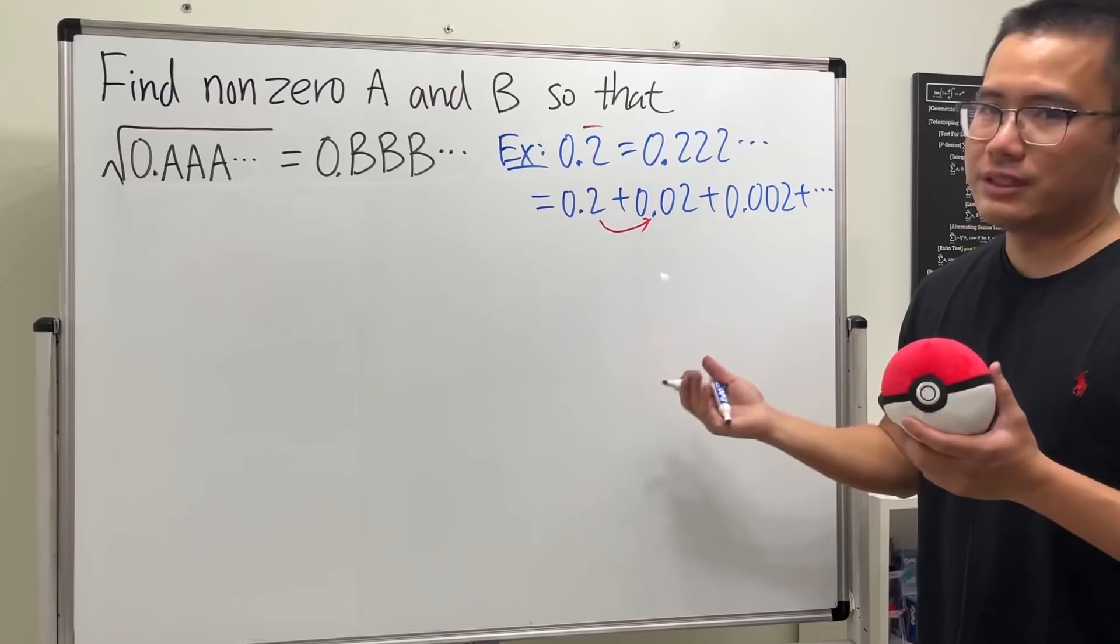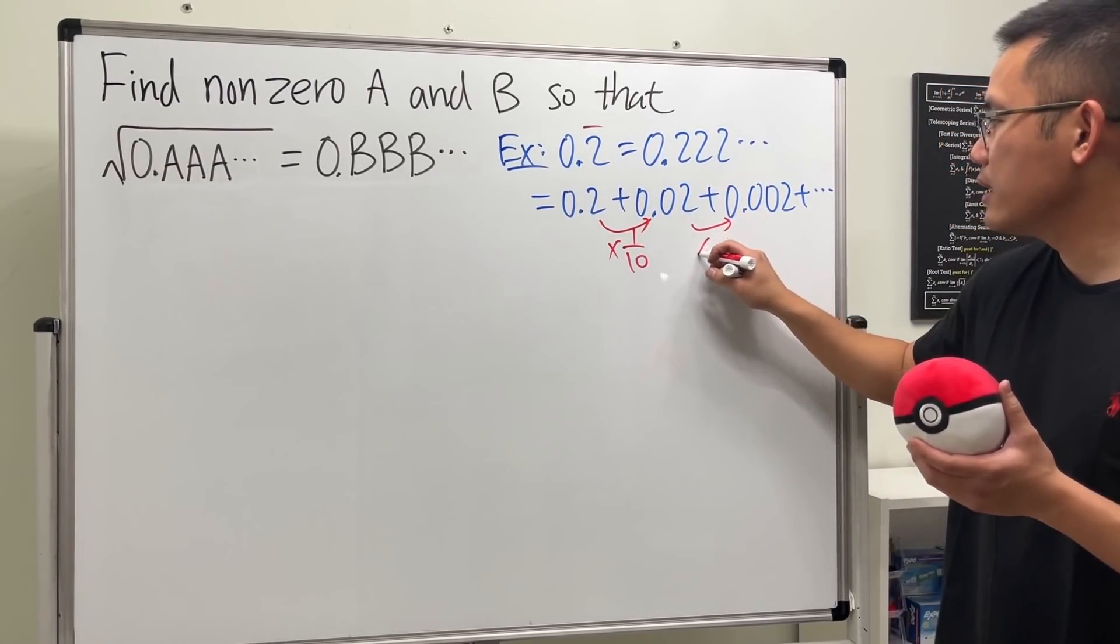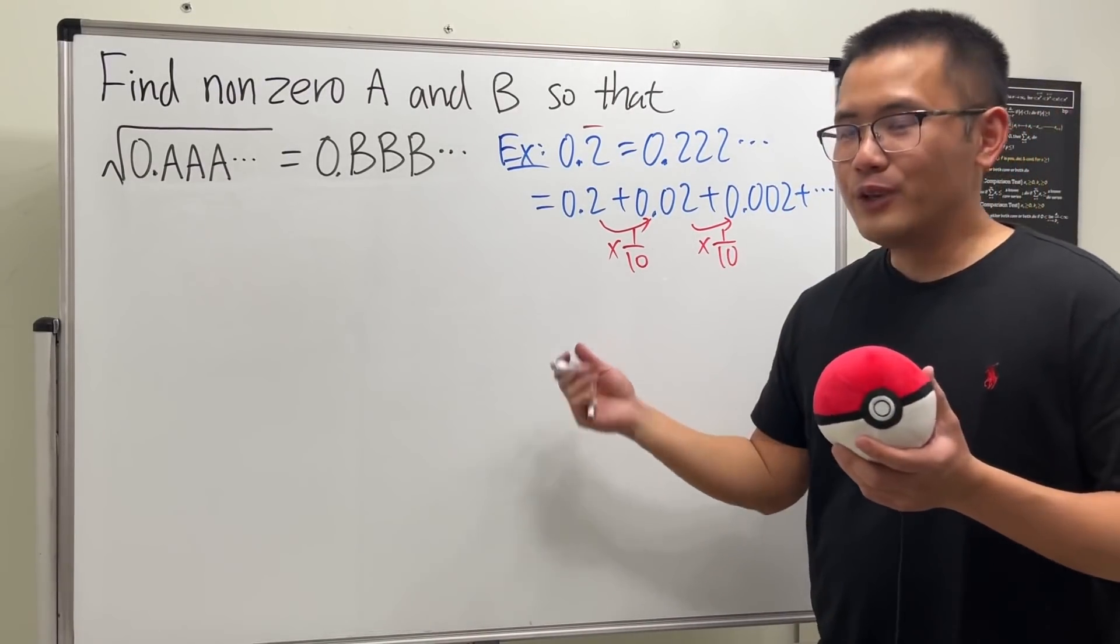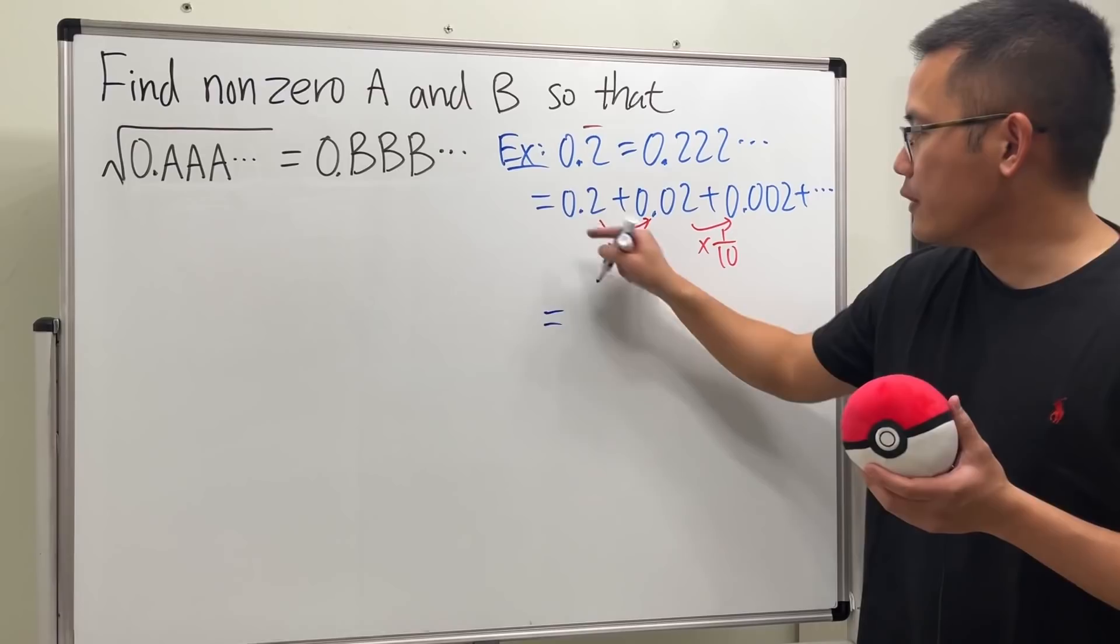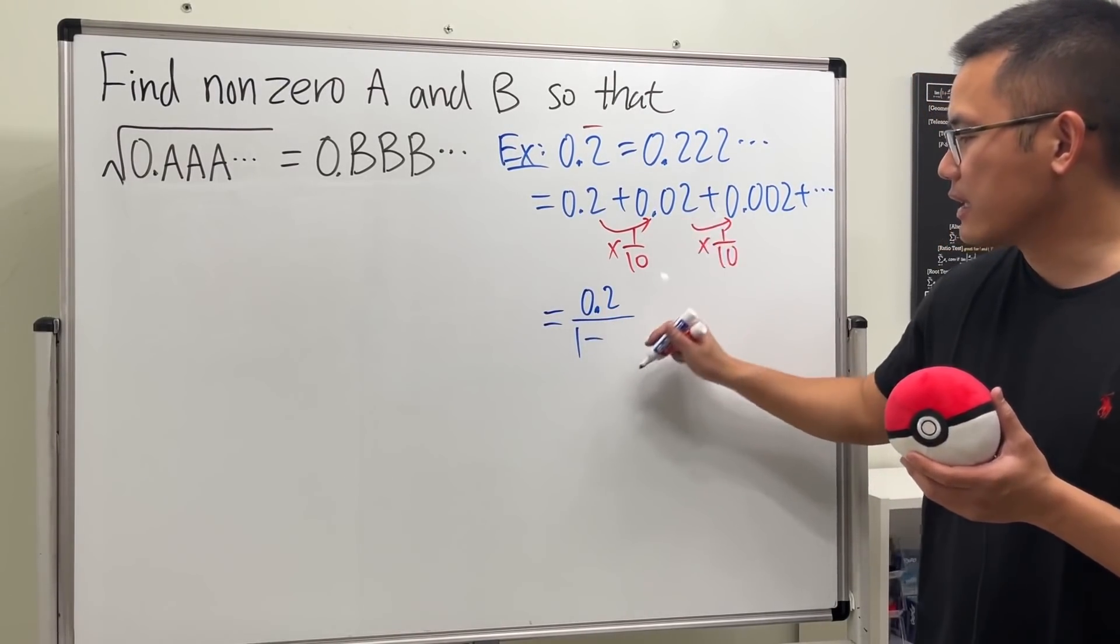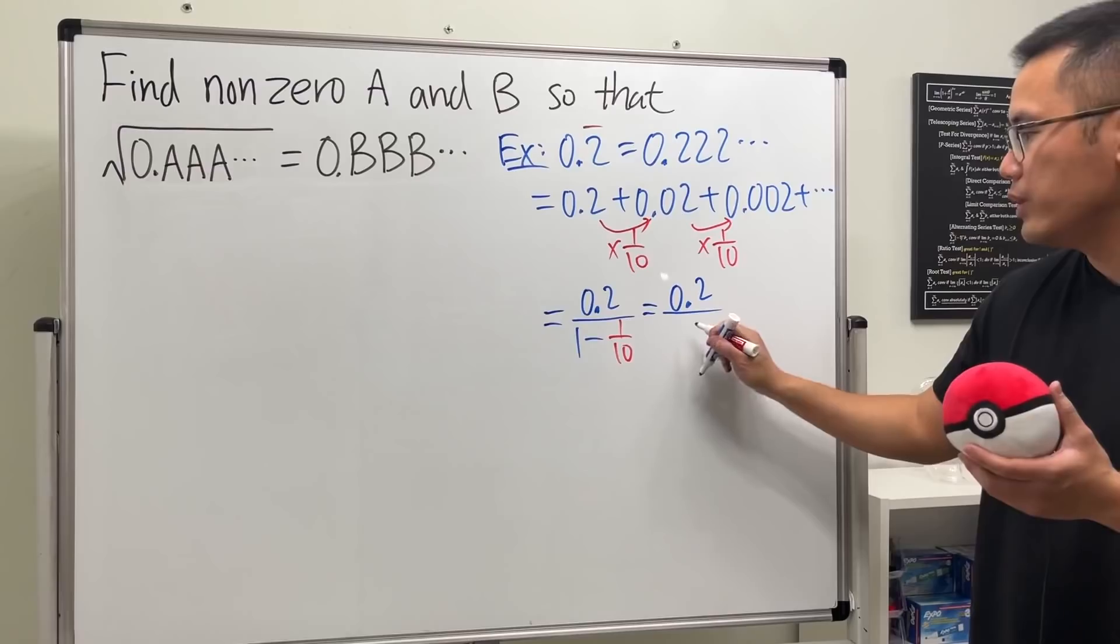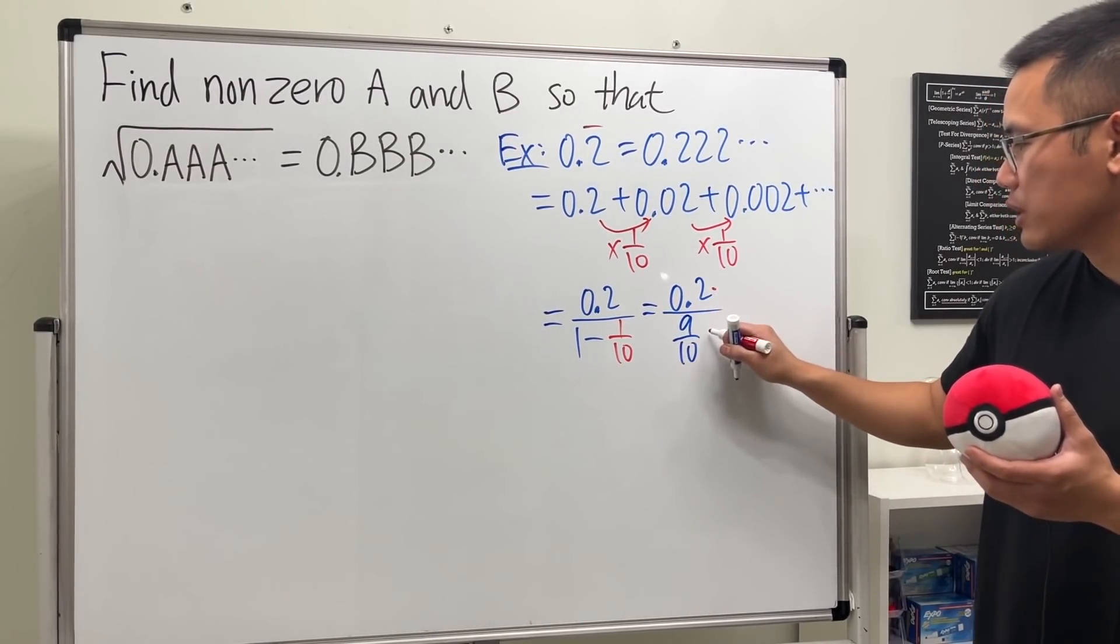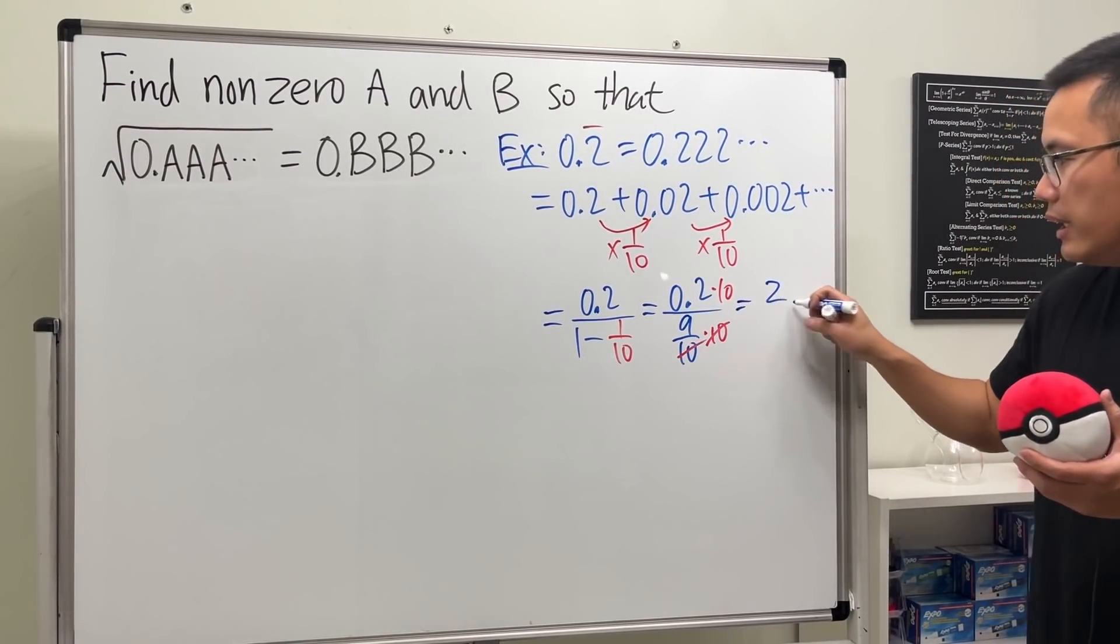This is precisely a geometric series with common ratio 1/10. It converges because the absolute value of 1/10 is less than 1. This gives us the first term, 0.2, divided by 1 minus the common ratio. We get 0.2 over 9/10. Multiply top and bottom by 10, and we get 2 on top and 9 on the bottom.